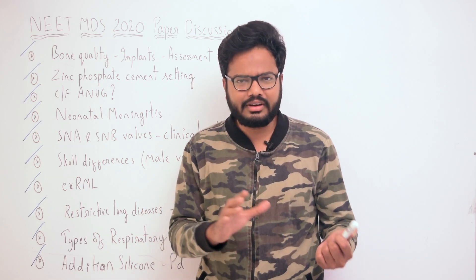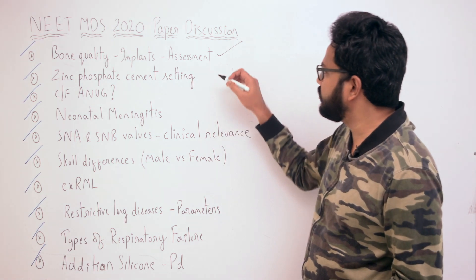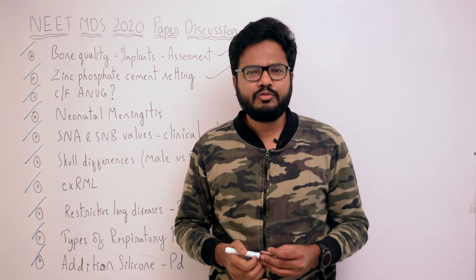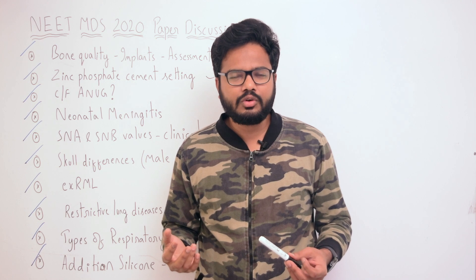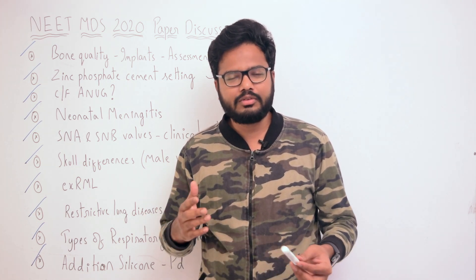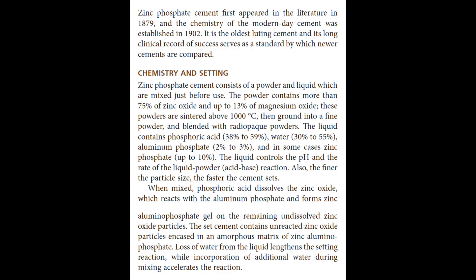Moving on to the next topic: zinc phosphate cement setting — which ion plays an important role? The answer is aluminium. As given in Phillips, zinc phosphate cement consists of powder and liquid which are mixed just before use. The powder has its own composition, and the liquid contains phosphoric acid, water, aluminium phosphate, and zinc phosphate in some cases.